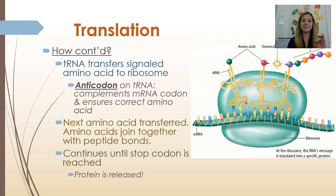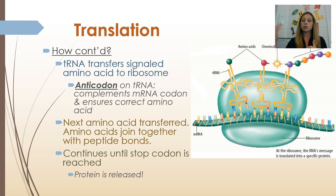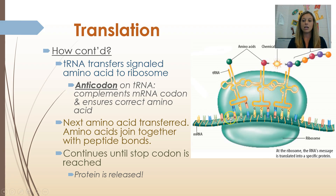Each codon signals for a specific amino acid. The amino acids are transferred to the ribosome by transfer RNA — the tRNA transfers the signaled amino acid to the ribosome. How do we know it's bringing the right amino acid? Transfer RNA has a three-base sequence on it called an anticodon. The anticodon on transfer RNA complements the mRNA codon and ensures that you're bringing the correct amino acid. So if our codon on the mRNA molecule is AGU, the anticodon would be UCA, and it would bring the correct amino acid to the ribosome.